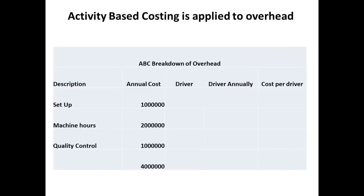The total overhead allocation is divided between setup, machine hours, and quality control. Note that the total fixed overhead remains the same at $4 million. These areas are the cost pools. The cost driver for each pool is determined: for setup, each individual setup is considered; for machine hours, it will be the number of hours of machine use; and for quality control, it will be the number of inspections made. The number of setups, machine hours, and inspections carried out annually are entered. We now have figures giving the cost of each setup as $10,000, each machine hour allocated at $25 per hour, and each inspection allocated at $50.